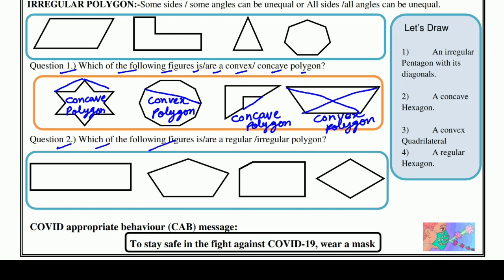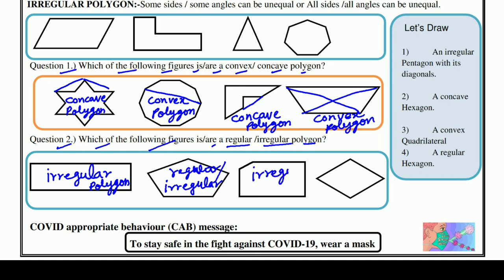This is the second question: which of the following figures are regular or irregular polygons? The first one is irregular because its sides are not equal and its angles are also unequal — so this is an irregular polygon. The second one — it depends on the sides and angles. This one is irregular. And the other one is a regular polygon.